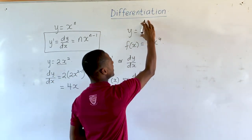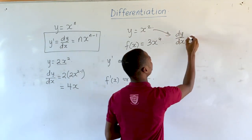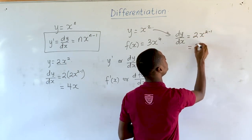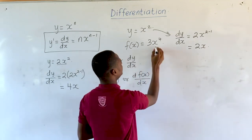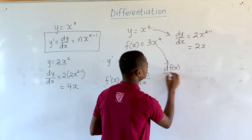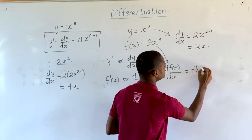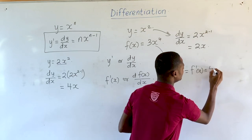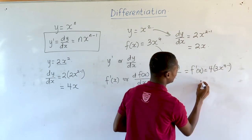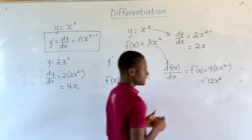So for the function y equal to x squared, dy/dx is equal to 2x raised to the power 2 minus 1, which gives us 2x. And for the function f of x equal to 3x to the power 4, df(x)/dx — which can also be written as f prime of x — equals 4 times 3x raised to the power 4 minus 1, giving us 12x raised to the power 3.